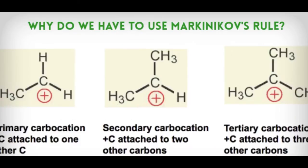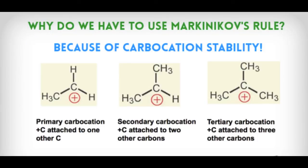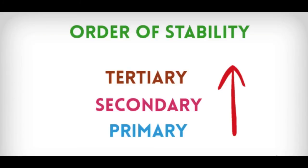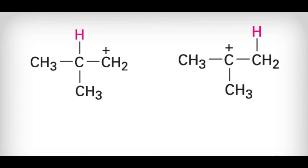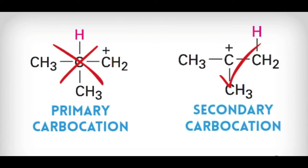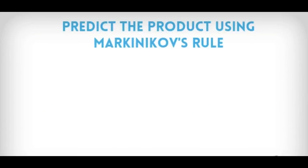Why do we use Markovnikov's rule? That's because of carbocation stability. Tertiary carbocations have three carbons attached to the positive carbon; secondary carbocations have two groups attached; and primary carbocations have one methyl group attached to the positive carbon. Tertiary carbocations are the most stable and primary are the least stable. The reason is that tertiary compounds are more stable because there are three electron-releasing methyl groups that help reduce the positive charge. So the hydrogen goes to the carbon with the greater number of hydrogens, and the chlorine goes to the carbon with fewer hydrogens. Following Markovnikov's rule gives a secondary carbocation intermediate, which is more stable than the primary carbocation that would form otherwise — that's the reason behind Markovnikov's rule.